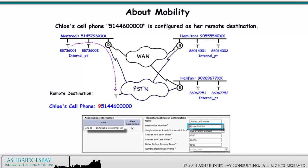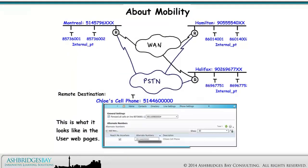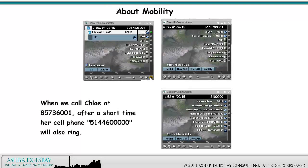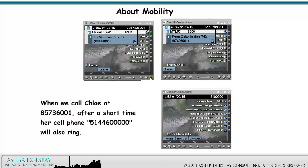Chloe's cell phone 514-460-0000 is configured as her remote destination. Remember, we need to put a 9 in front of this when we configure the destination number. This is what it looks like in the user web pages. When someone calls Chloe at 8 573 6001, her cell phone 514-460-0000 will also ring after a short delay. Let's test Mobile Connect — we'll call 8 573 6001 from Oakville.